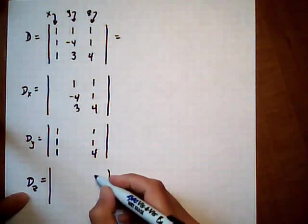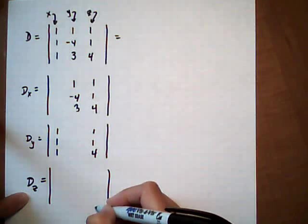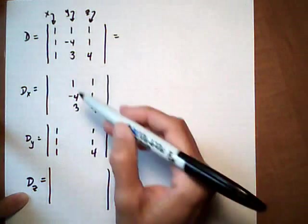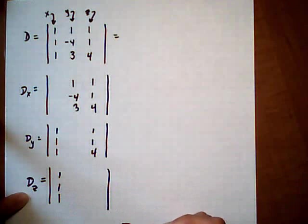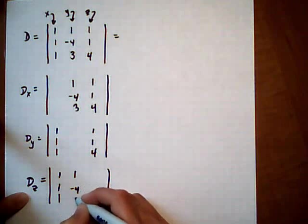And then Dz, we leave the z column blank, which is the third column. And put exactly what we see up top for x and y. 1, 1, 1, 1, 1, minus 4, 3.